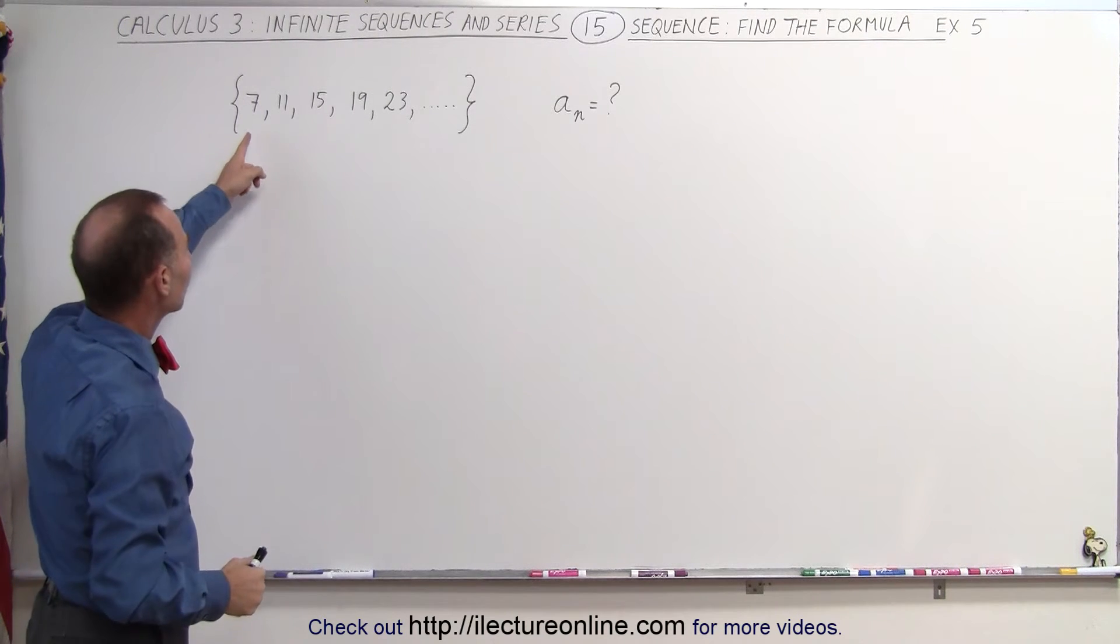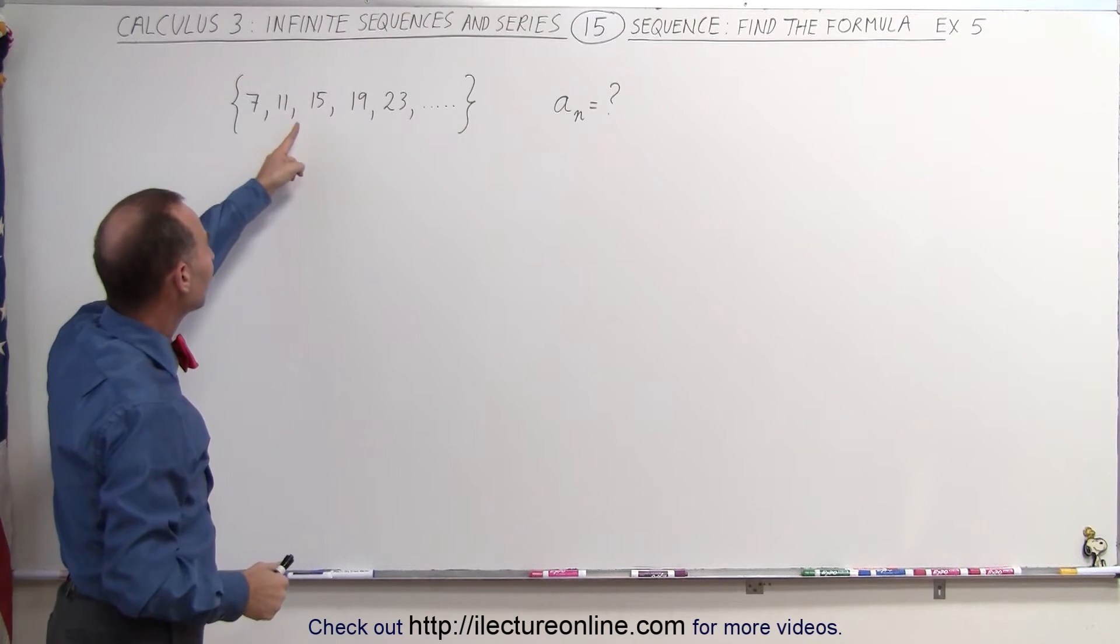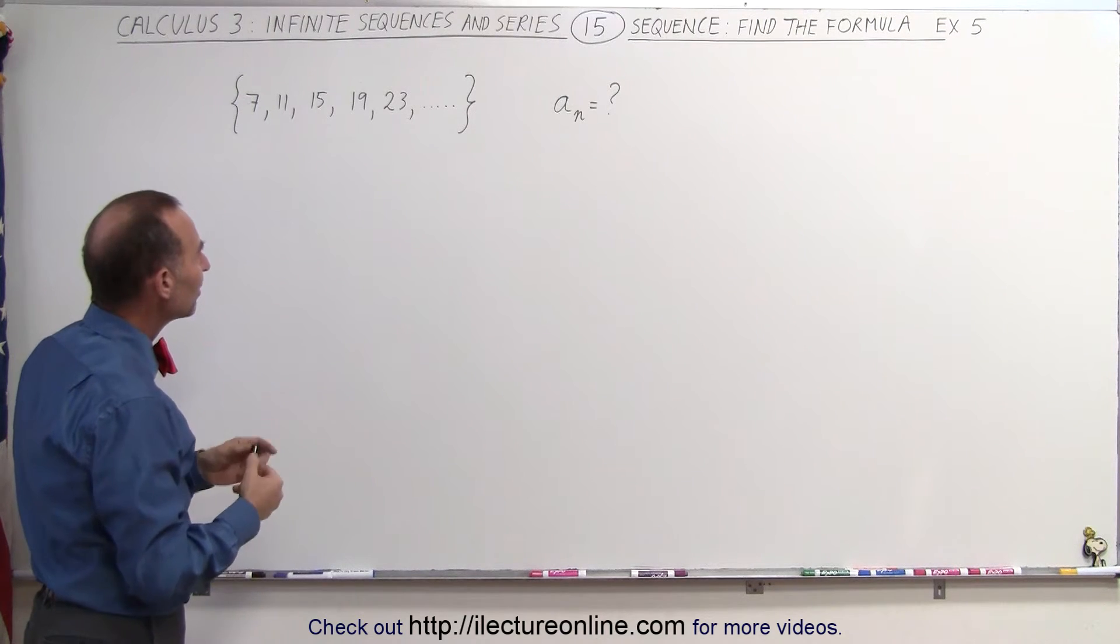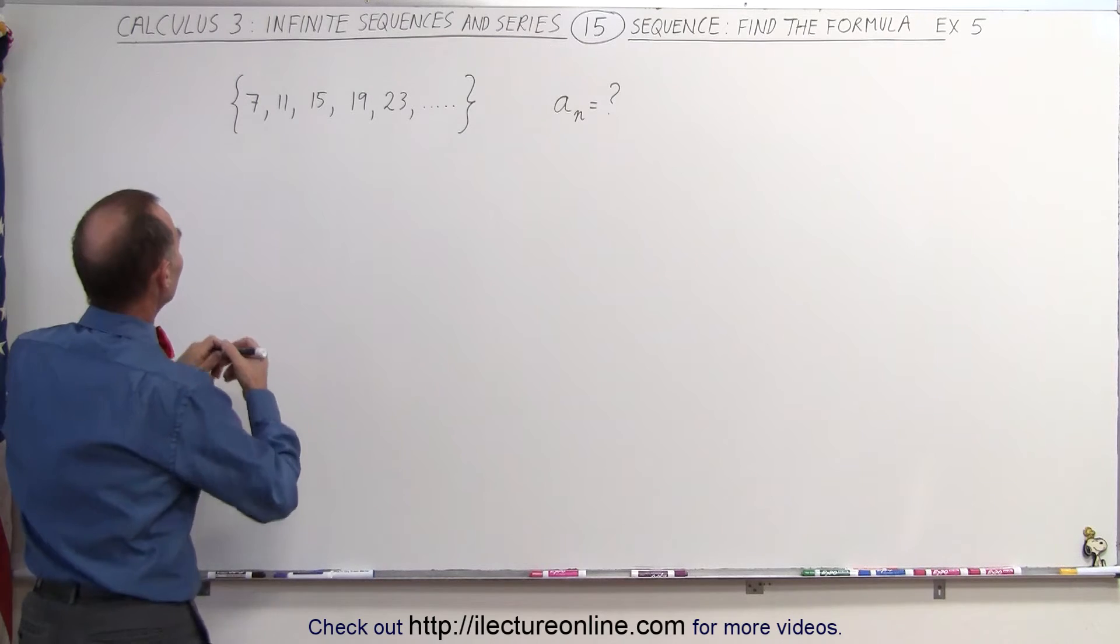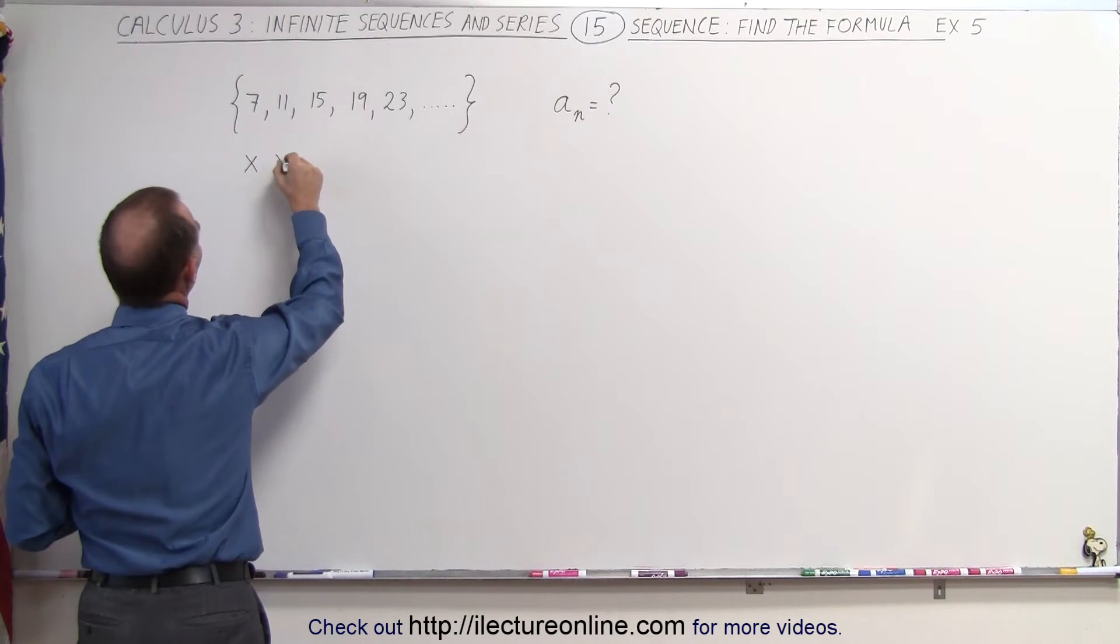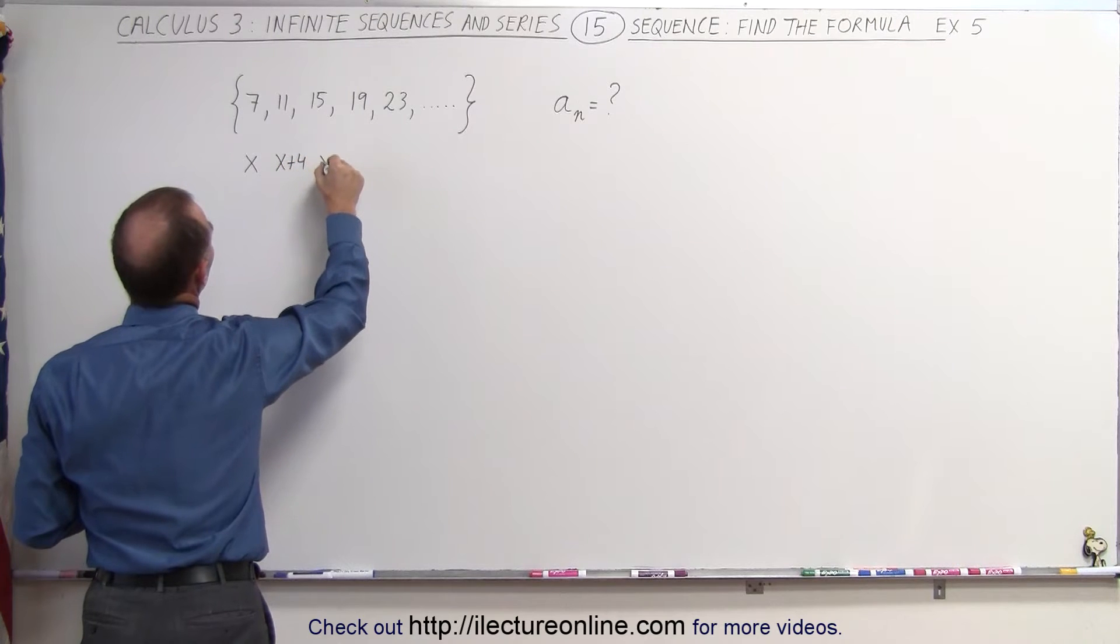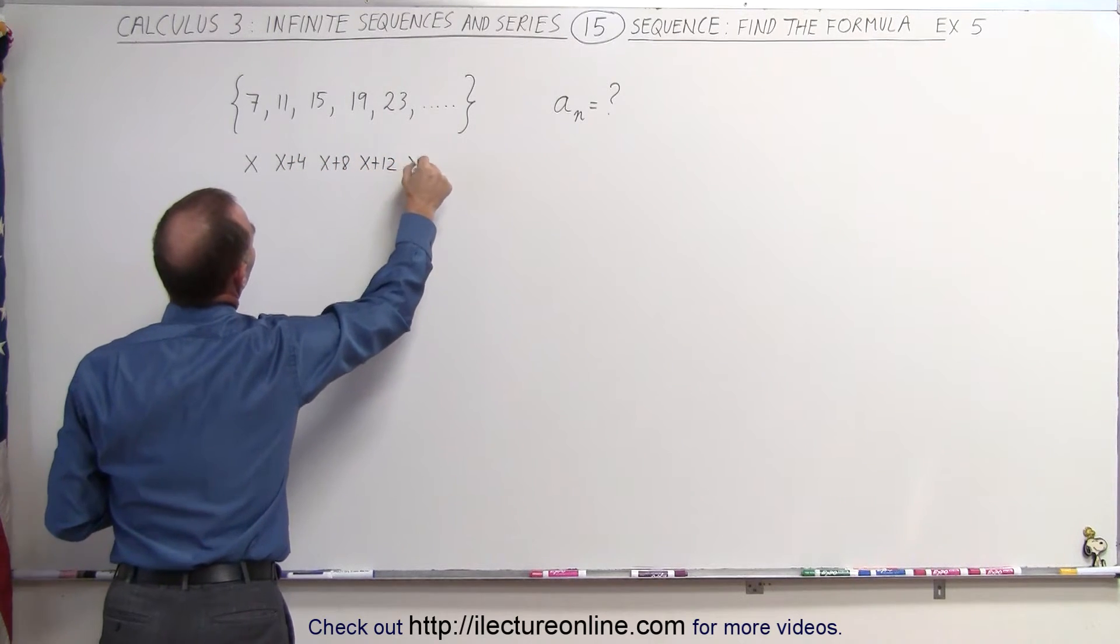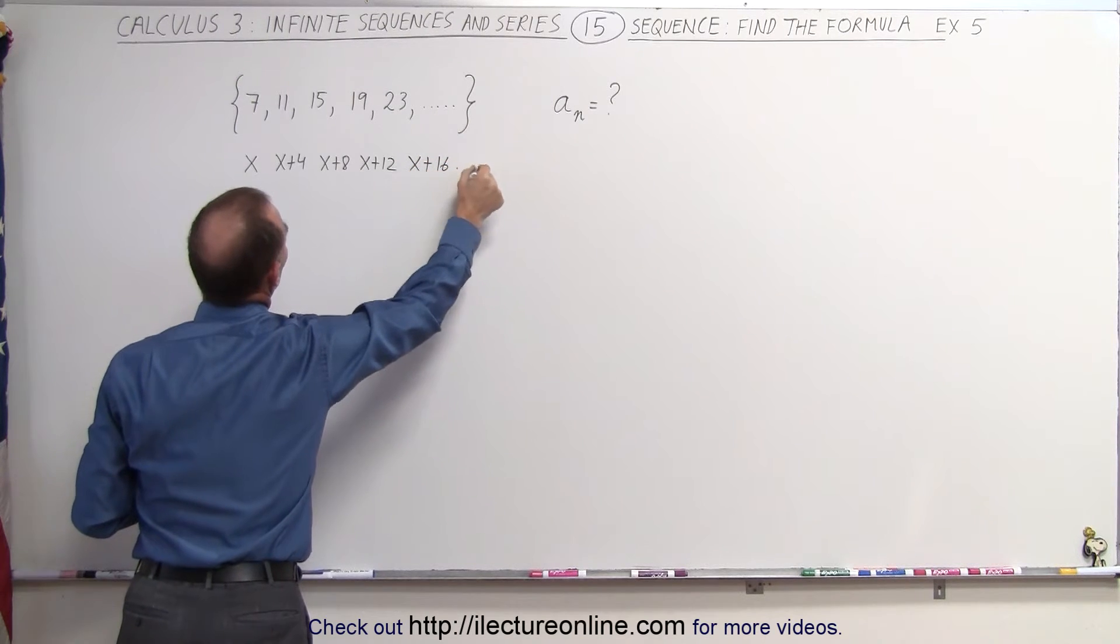Here we're starting with the number 7, and then it increases to 11, 15, 19, 23, and so forth. Which means that if we let 7 be x, we can say that this is equal to x, then this becomes x plus 4, this becomes x plus 8, this becomes x plus 12, x plus 16, and so forth.